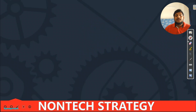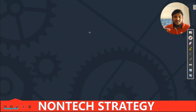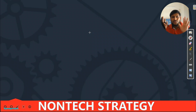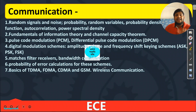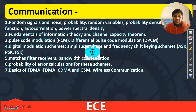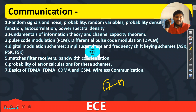Now we move to the technical part. I will first discuss ECE, then CSC — CSC students can use the timestamp below. For ECE, we start with Communication. This time we will do Digital Communication, which is the fourth subject. Combining analog and digital communication, you can expect seven to eight questions from this subject.